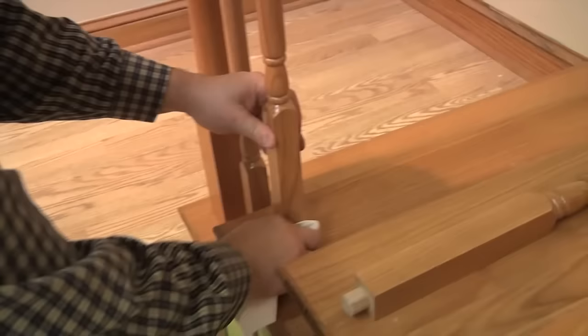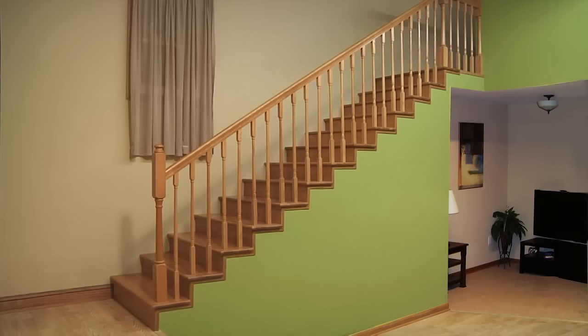Clean up any excess glue. The railing should be allowed to set for 24 hours for the glue to dry.